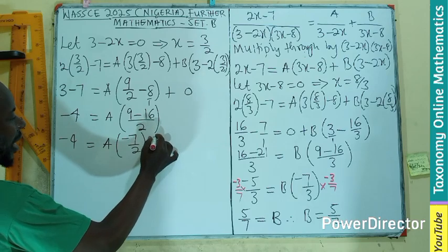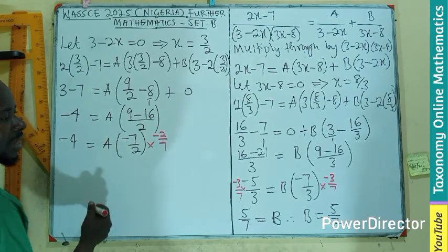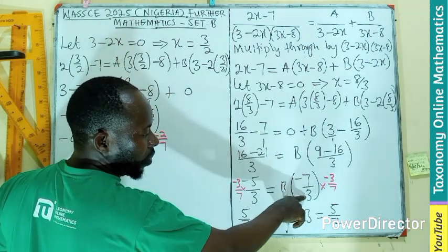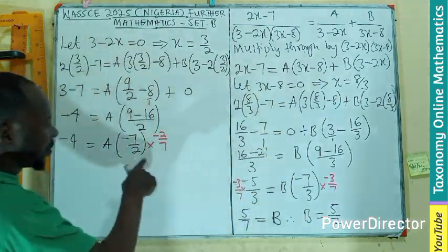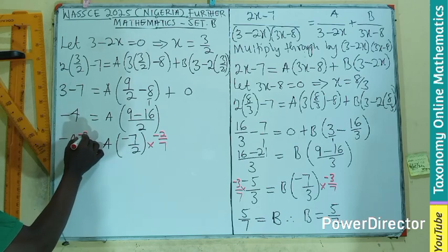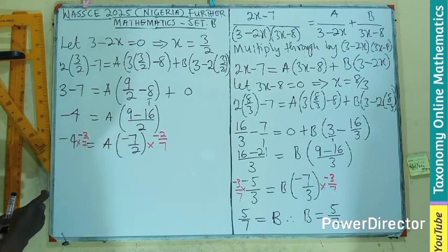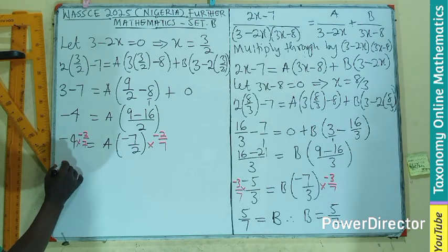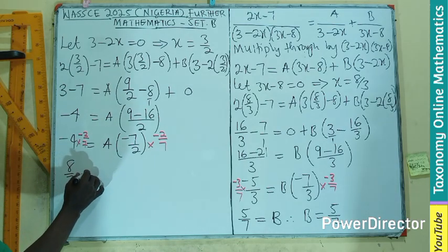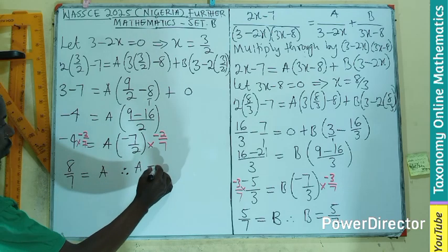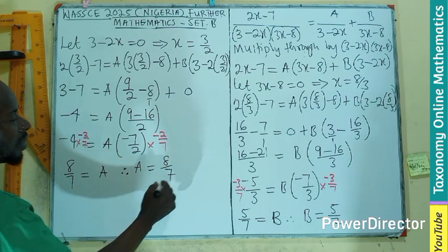Find your LCM, which will be 2. 2 times this will be 16 minus 4 equals to A into bracket minus 7 on 2. Here we are going to multiply by negative 2 on 7, the reciprocal. In doing so, this will multiply the top to give you 8 over 7 equals to A. Therefore, A is also 8 on 7.